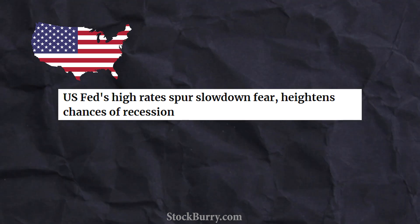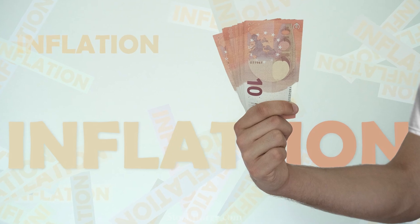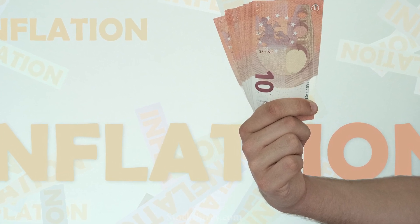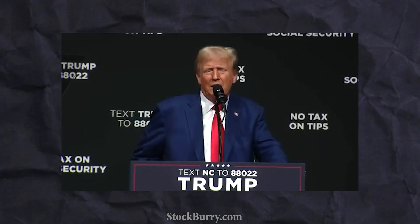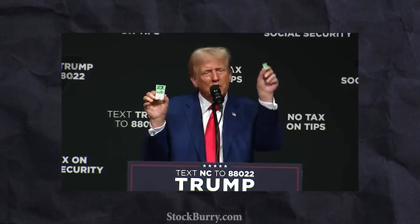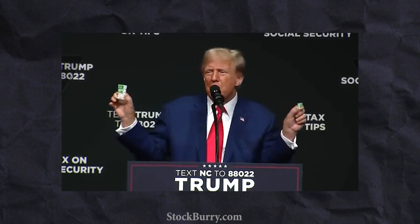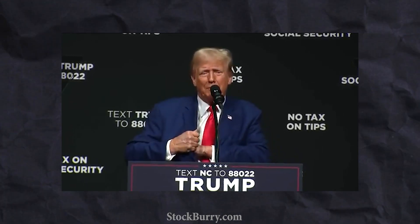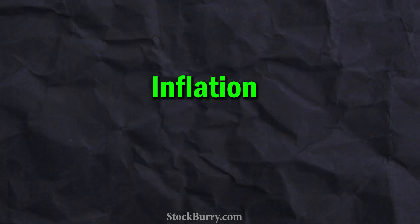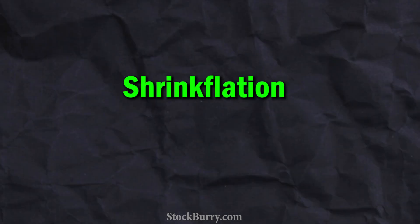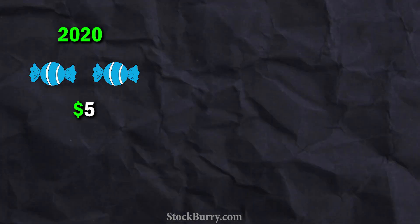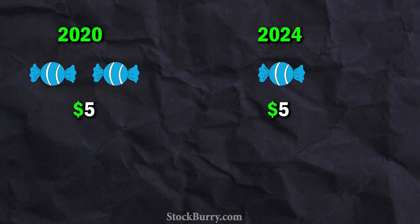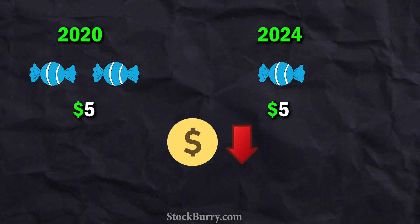The second factor that affects currency is inflation. When a country has high inflation, the value of its currency decreases, because nobody wants to buy and hold a currency with low value. You might have seen Donald Trump's video about tic-tacs — what he is explaining is inflation, or shrinkflation. For example, if you could buy two candies for five dollars in 2020, now with five dollars you can only get one candy. That is inflation — with the same amount of money, you get fewer goods, meaning the value of your money decreased.